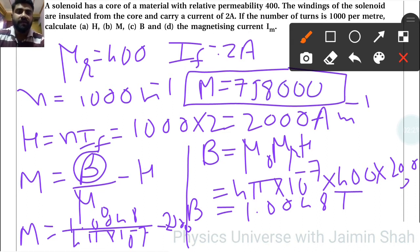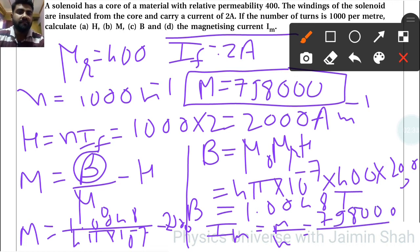That is our magnetization capital M. Now magnetizing current Iₘ. Iₘ = M/n, so 798,000 divided by n = 1000.